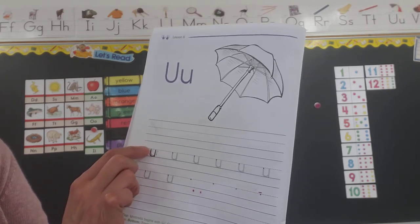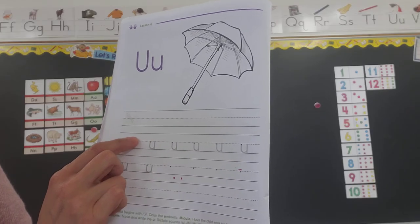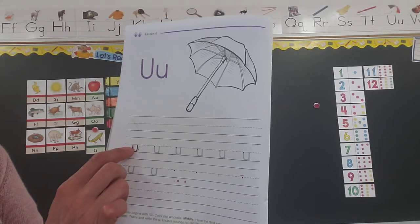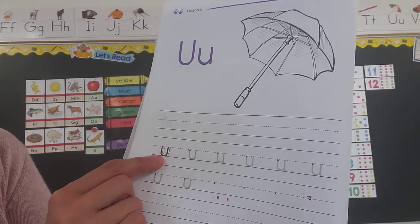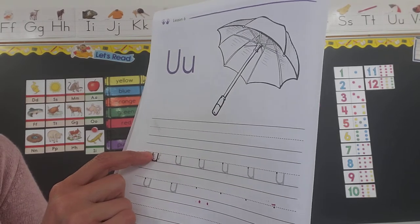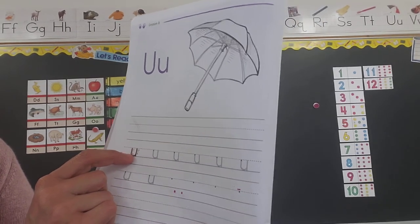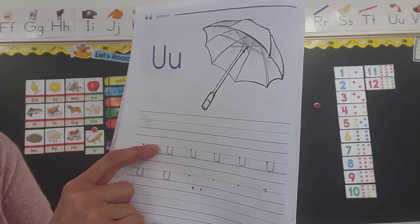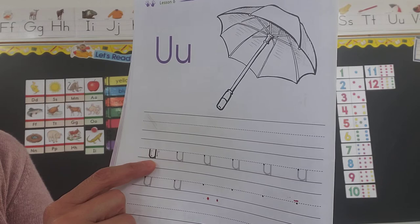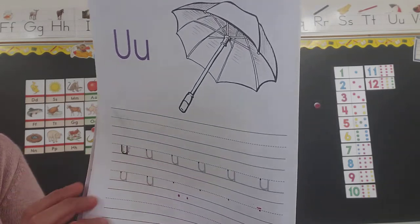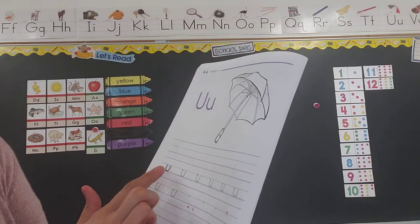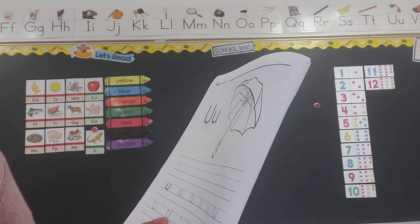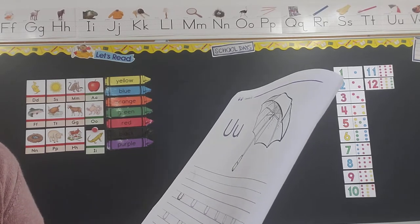Start at the dotted line — just make a little loop and back down to the solid line. It's pretty easy. You can look off of this little diagram here. Start where the wand is at the top of the arrow, go around, make a loop. Remember: don't go above the dotted line and don't go below the solid line — keep them inside the lines. You get to trace eight of them and then make four all on your own.